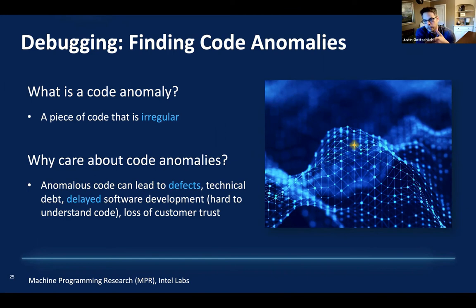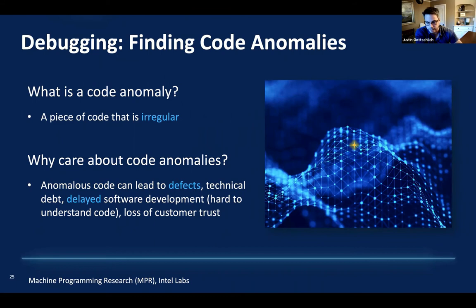What's interesting about code anomalies is they can be useful not just as a reactive mechanism for fixing code, but as a proactive mechanism — we can look at code and say this is probably going to turn into a bug, you should fix it now.